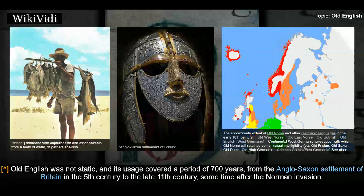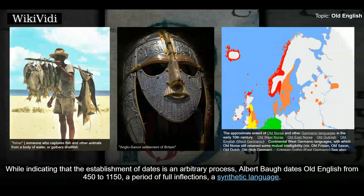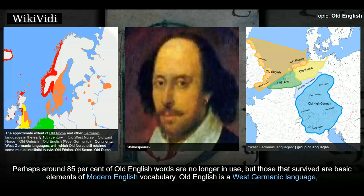Old English was not static, and its usage covered a period of 700 years, from the Anglo-Saxon settlement of Britain in the 5th century to the late 11th century, some time after the Norman invasion. Albert Bauer dates Old English from 450 to 1150, a period of full inflections — a synthetic language. Perhaps around 85% of Old English words are no longer in use, but those that survived are basic elements of modern English vocabulary.